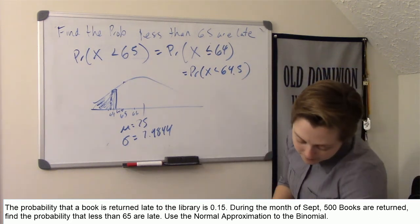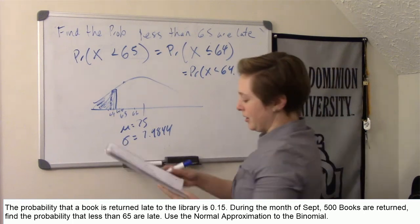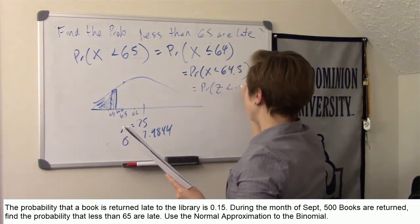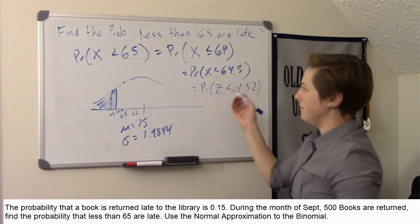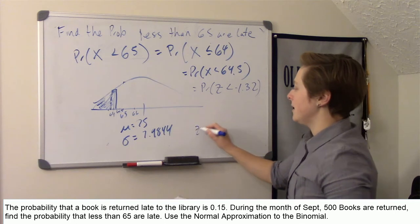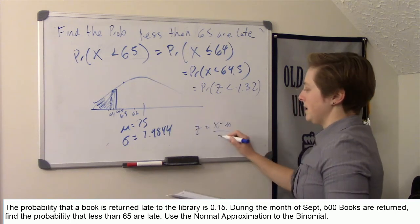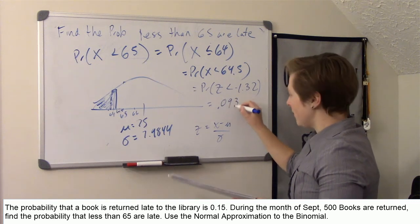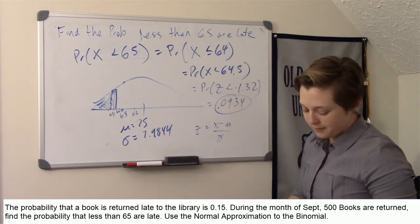64.5, so that's my continuity correction. When you do that, you should get z less than negative 1.32. That's using, go ahead and calculate z using x minus mu divided by sigma. And if you look at the table, 0.0934.